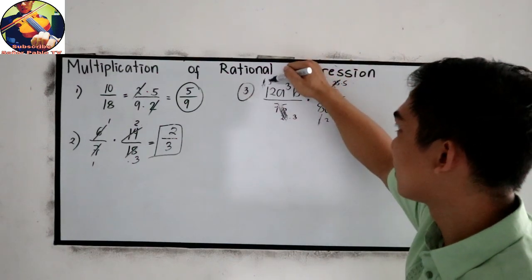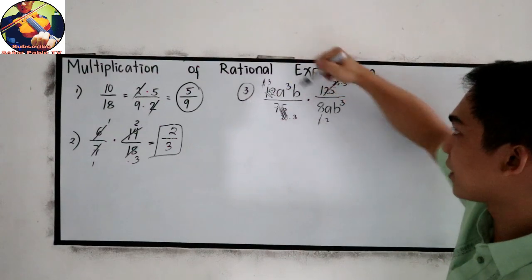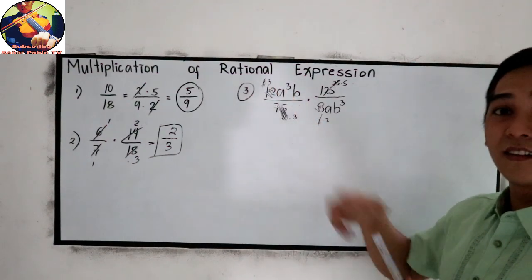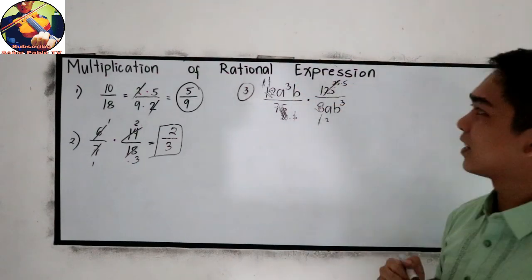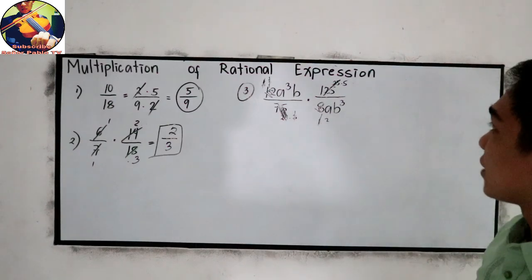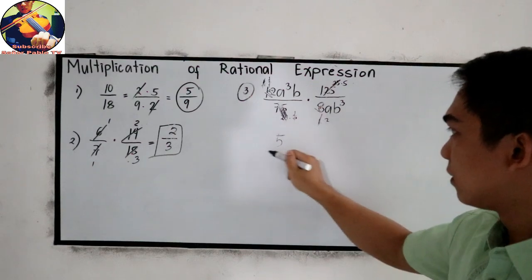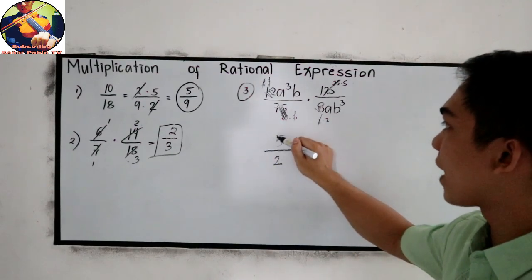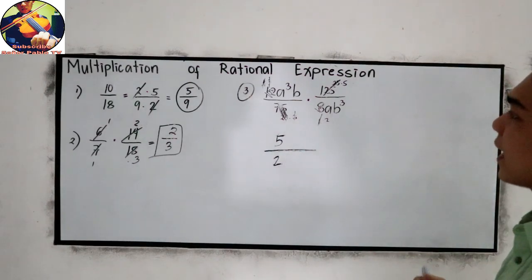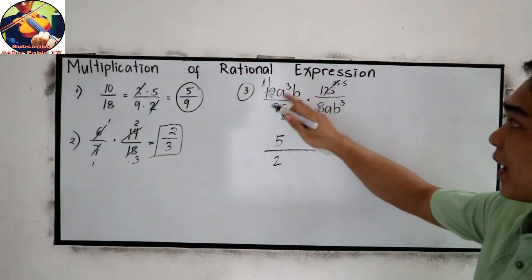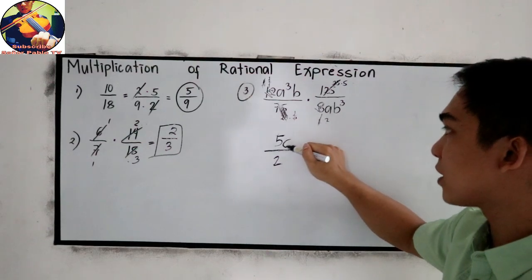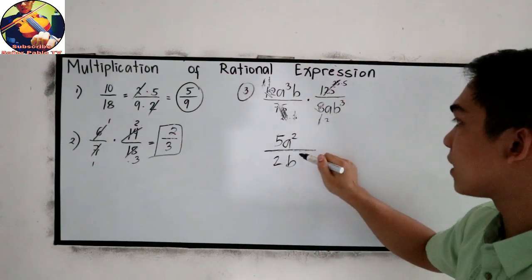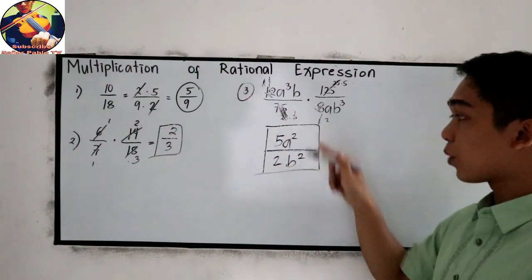There is more. Since this is cancelled now, 3 and 3 will be cancelled out. 3 divided by 3, that will become 1. So we can also cancel 3 and 3. Now for our remaining coefficients, we have 5 for the numerator and 2 in our denominator. So 5 over 2. Next, proceed in our variable. A cubed divided by A, our numerator now is A squared. And B divided by B cubed, this will become B squared. And this is now our final answer.